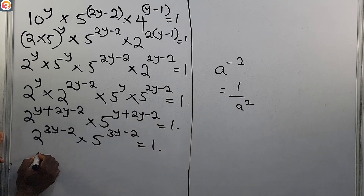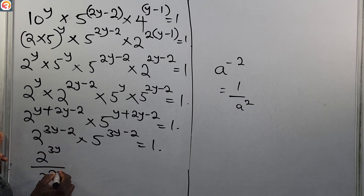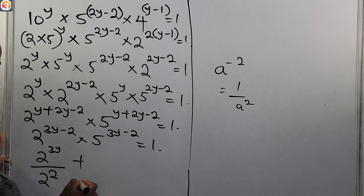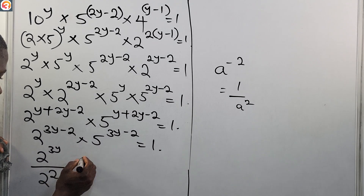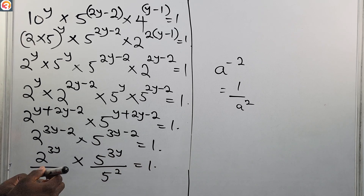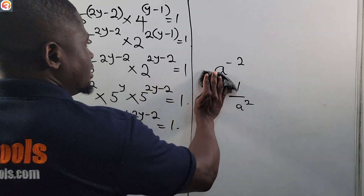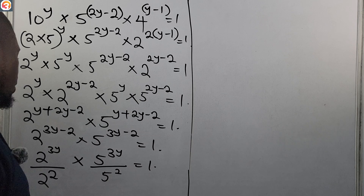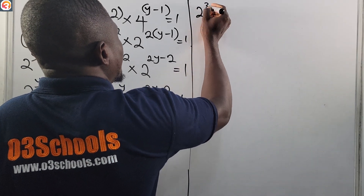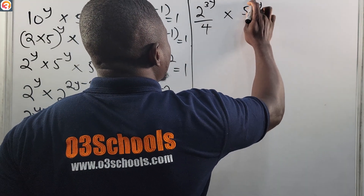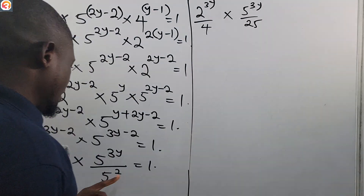So applying that here: 2 raised to power 3y over 2 raised to power 2, multiplied by 5 raised to power 3y over 5 raised to power 2, equals 1. Now 2 raised to power 2 is 4, so we have 2 raised to power 3y over 4, times 5 raised to power 3y over 25, equals 1.